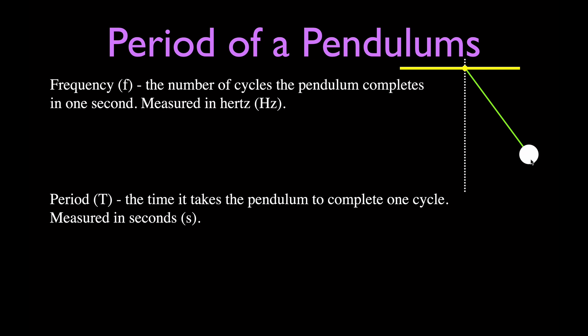When the pendulum swings out and back, that's a cycle. The amount of time it takes to swing out and back is the period, and the number of times it does that in one second is the frequency. The frequency has the abbreviation f and the unit hertz (Hz). The period has the abbreviation T and is measured in seconds.